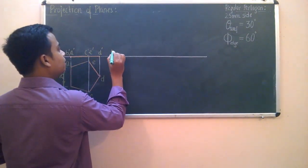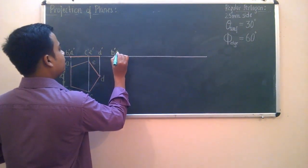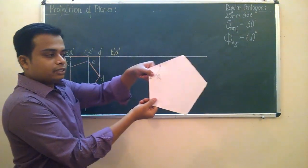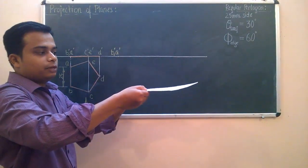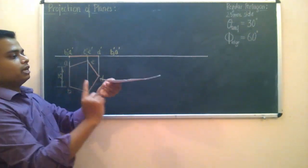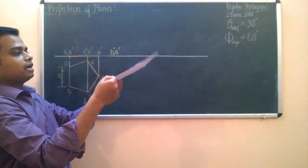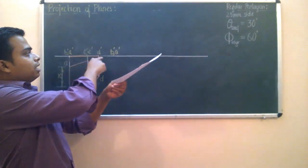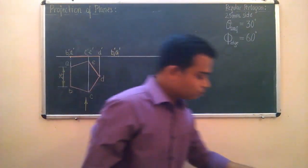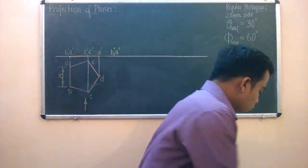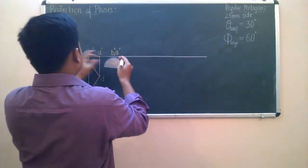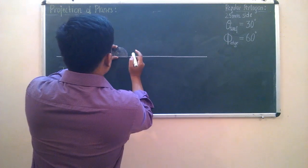Let us do this quickly. B dash, A dash. The surface is making an angle of 30 degrees. Initially this line is kept flat. When the surface makes an angle of 30 degrees with the horizontal plane, this line in fact will get inclined at an angle of 30 degrees when you look at this from the front. So there is nothing much to do — rather you have to incline this line at an angle of 30 degrees.